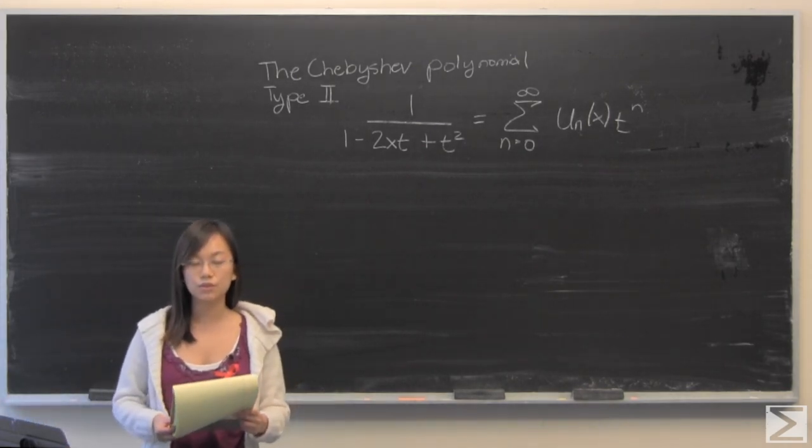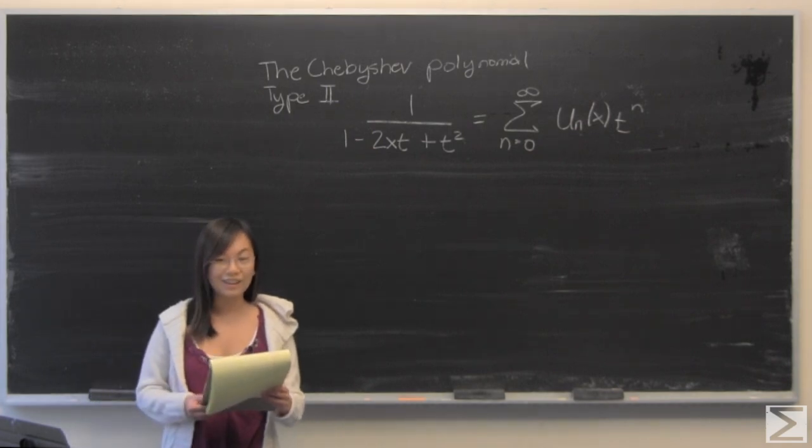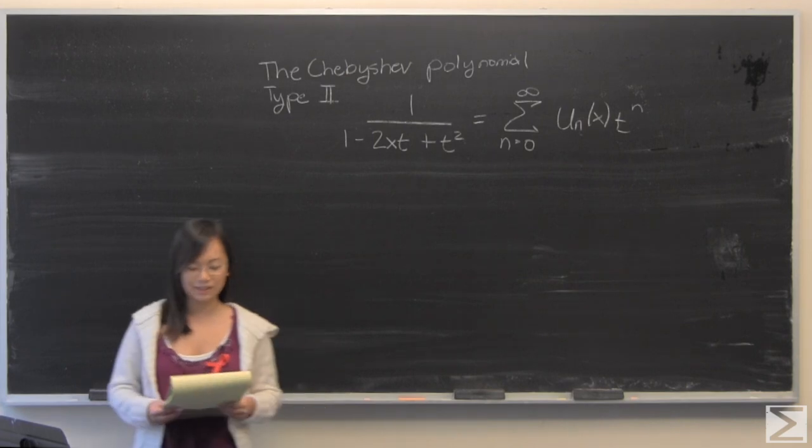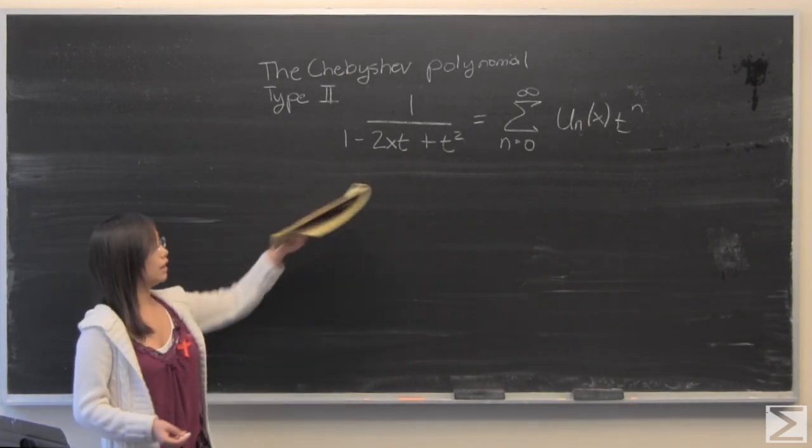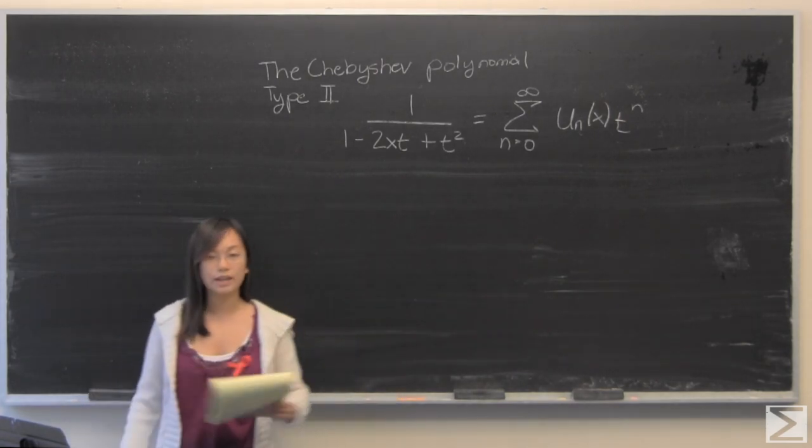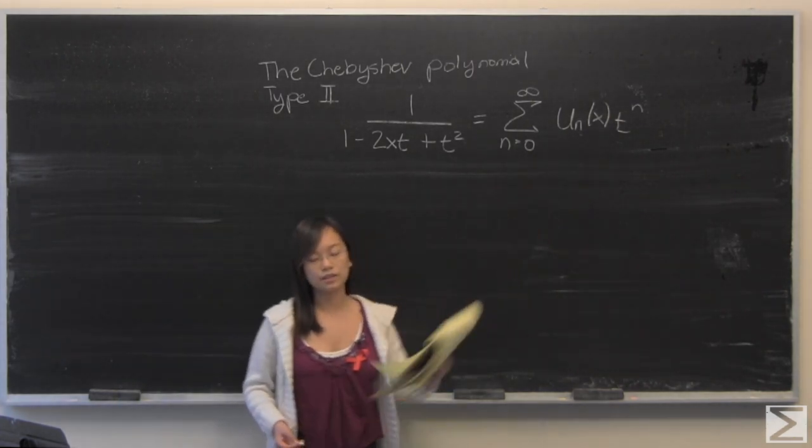For the full problem and solution transcript, you can check out the description of this video on our YouTube channel. This week's Advanced Knowledge Problem of the Week is about the Chebyshev polynomial. It gives you this which will generate the Chebyshev polynomial and asks you to develop a series representation for this u sub n of x.